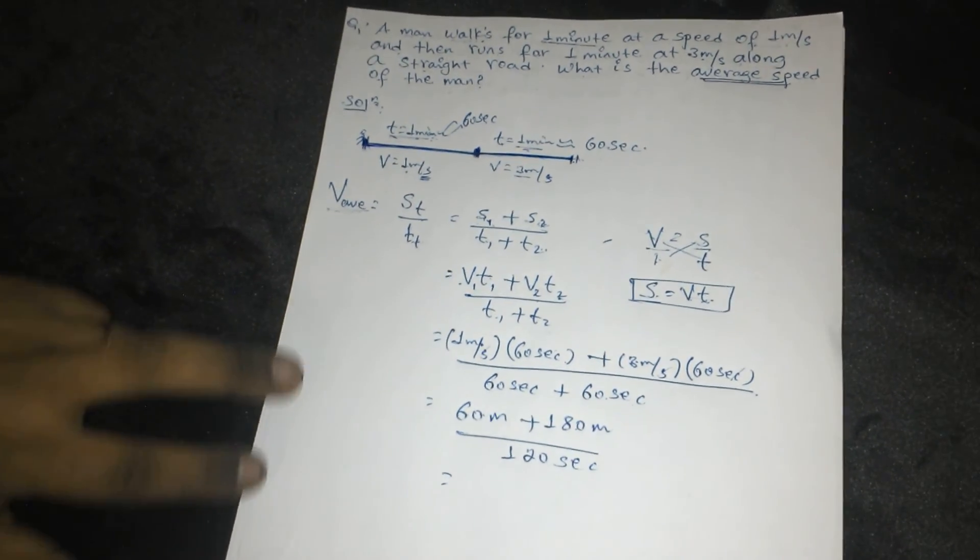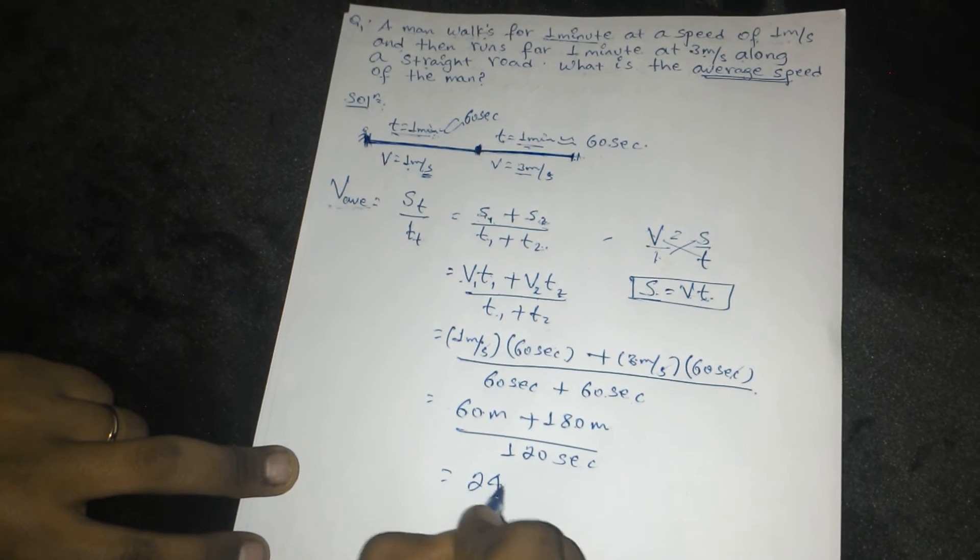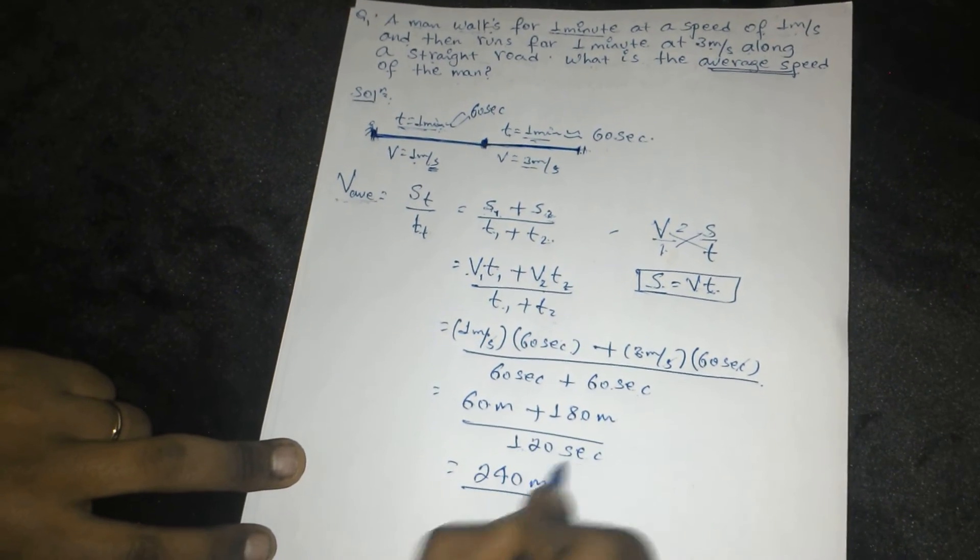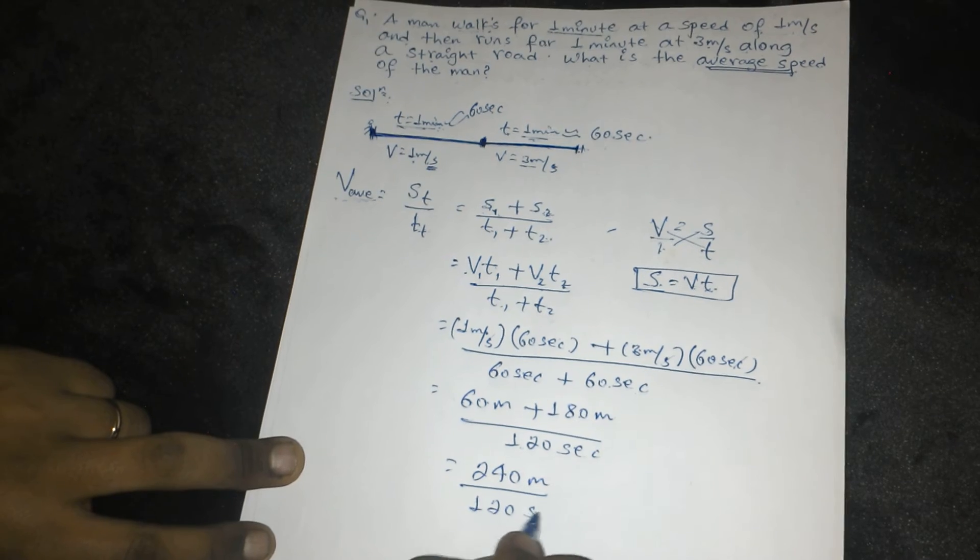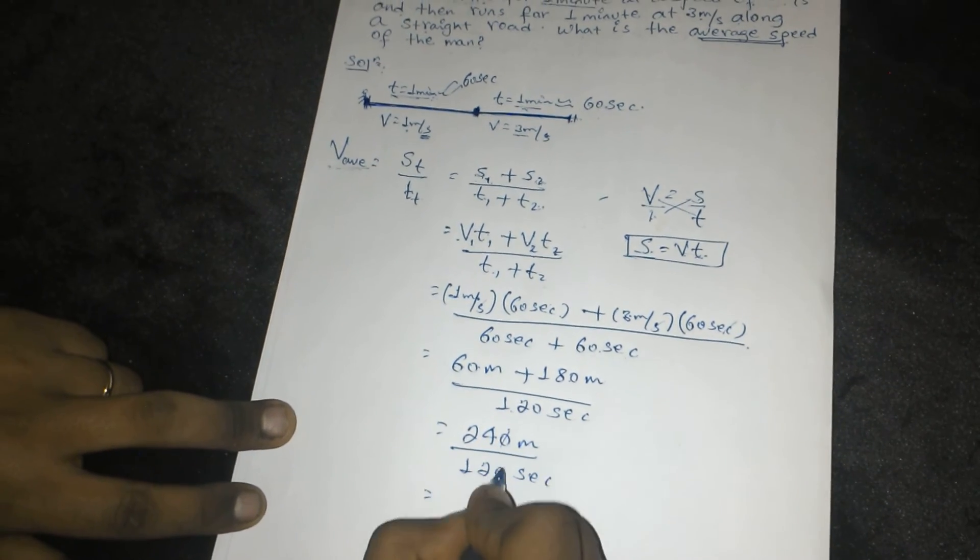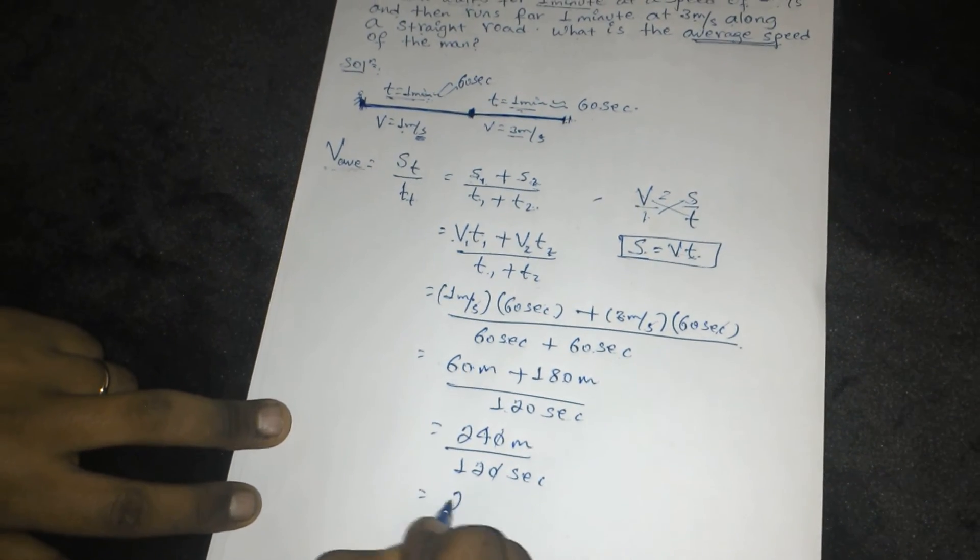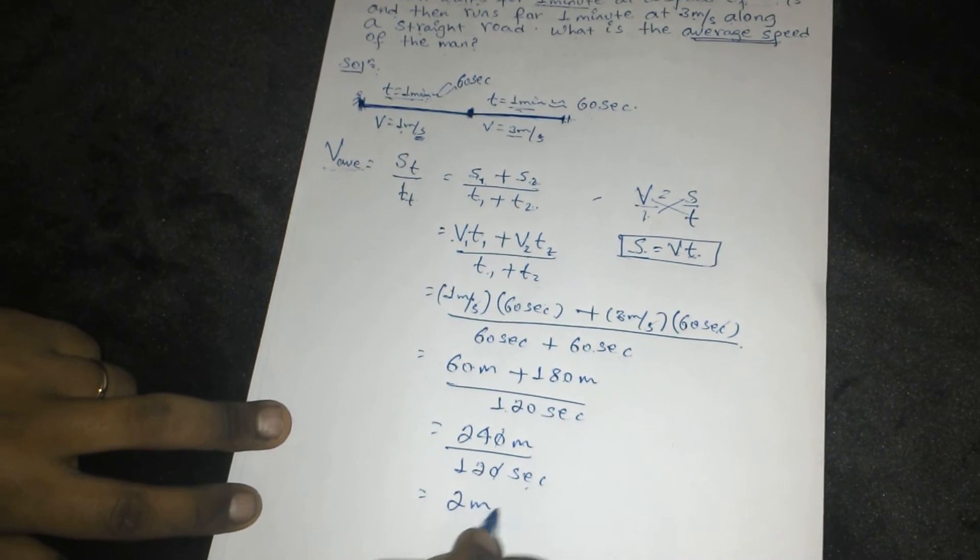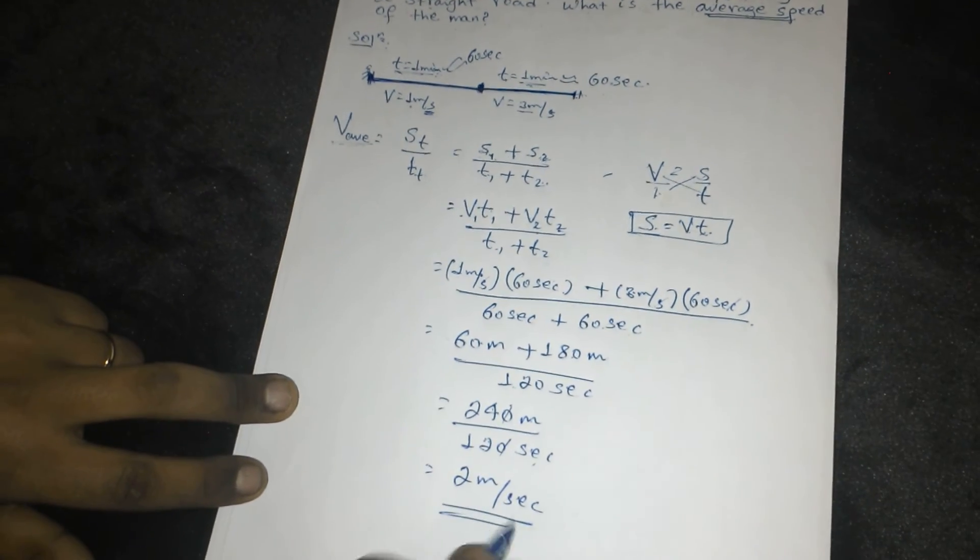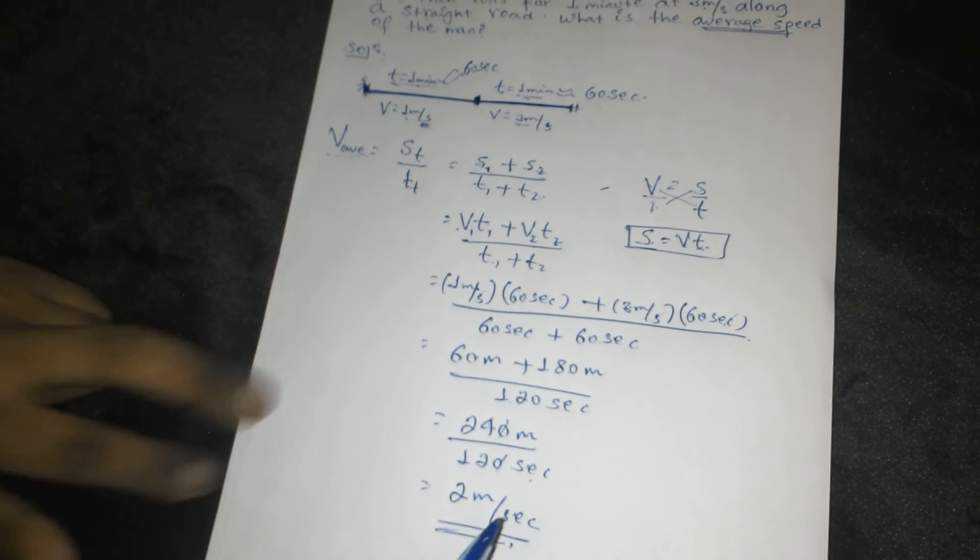240 meters divided by 120 seconds equals 2 meters per second. The average speed will be 2 meters per second.